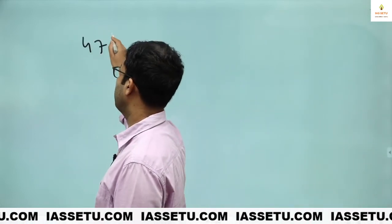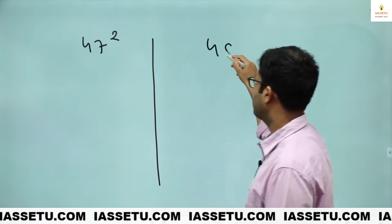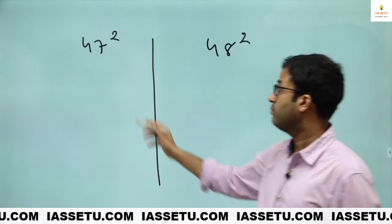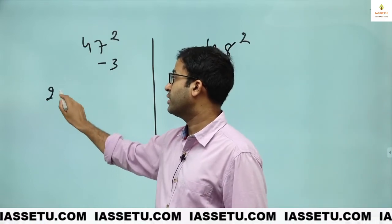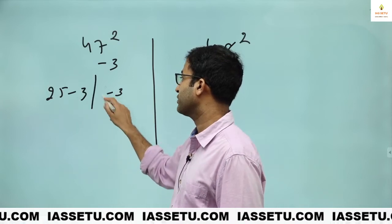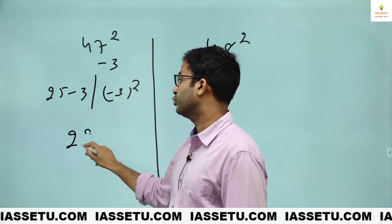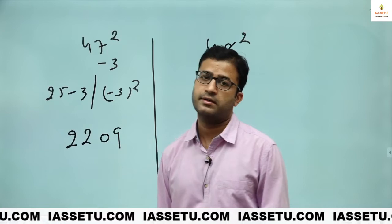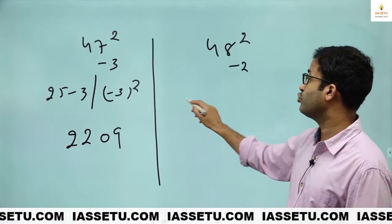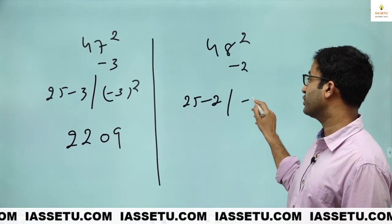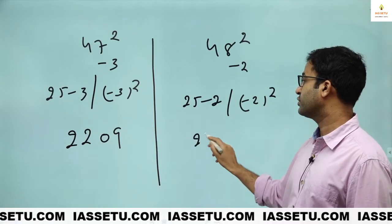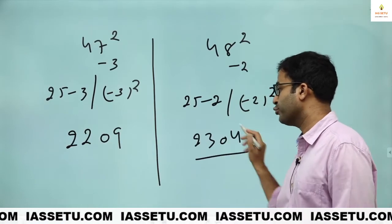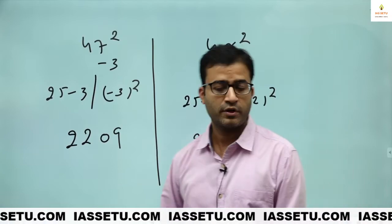Like if it is 47 square. 48 square. Be careful. Minus 3. So 25 minus 3. Minus 3 square. So this is 22, 09. Don't write just 9. Write 09. Minus 2. 25 minus 2. This is minus 2 square. This is 23, 04. 2304. Okay.